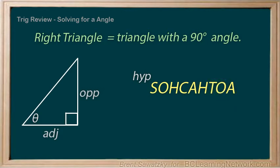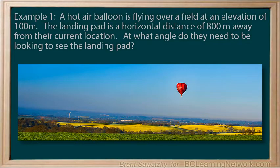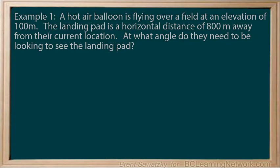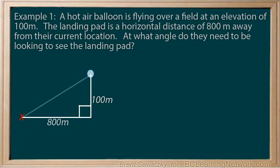Let's take this knowledge and go ahead and solve a couple examples. Example 1: A hot air balloon is flying over a field at an elevation of 100 meters. The landing pad is a horizontal distance of 800 meters away from the current location. At what angle do they need to be looking to see the landing pad? Let's start with a sketch. We have the balloon at an elevation of 100 meters, and horizontally the target is 800 meters away. Drawing a line for our line of sight, we have our triangle. Let's mark our unknown angle as theta.